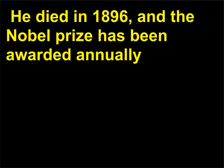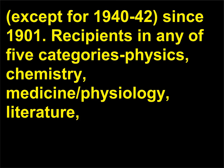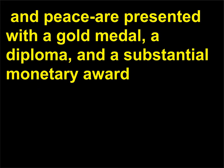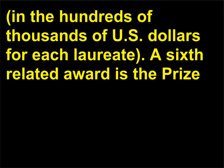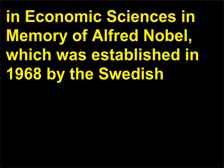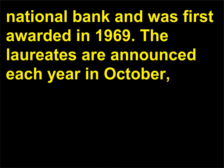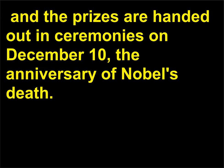He died in 1896, and the Nobel Prize has been awarded annually, except for 1940–42, since 1901. Recipients in any of five categories — physics, chemistry, medicine/physiology, literature, and peace — are presented with a gold medal, a diploma, and a substantial monetary award in the hundreds of thousands of U.S. dollars for each laureate. A sixth related award is the prize in economic sciences in memory of Alfred Nobel, established in 1968 by the Swedish National Bank and first awarded in 1969. The laureates are announced each year in October, and the prizes are handed out in ceremonies on December 10th, the anniversary of Nobel's death.